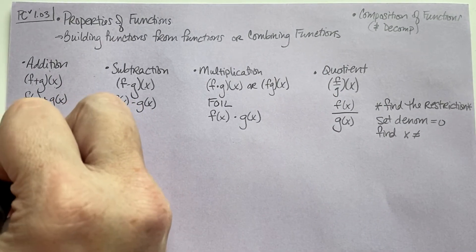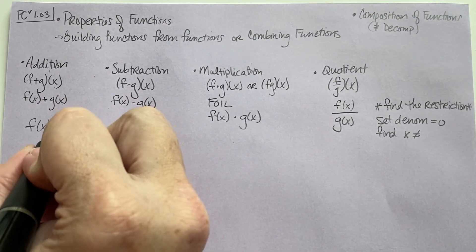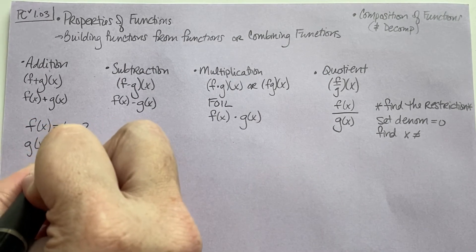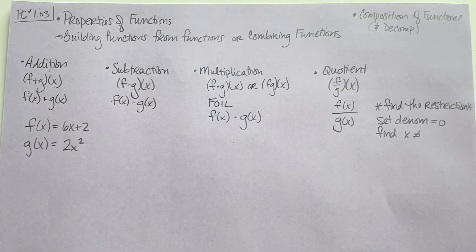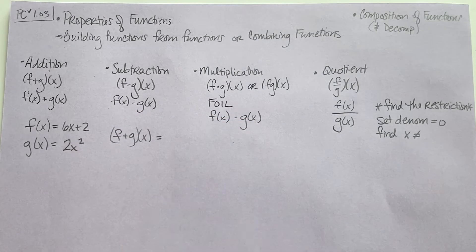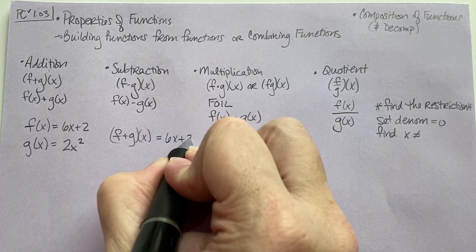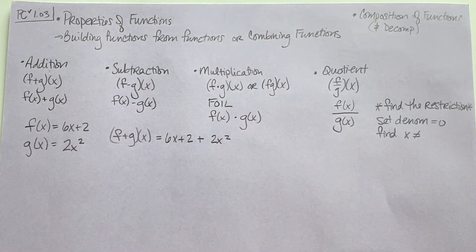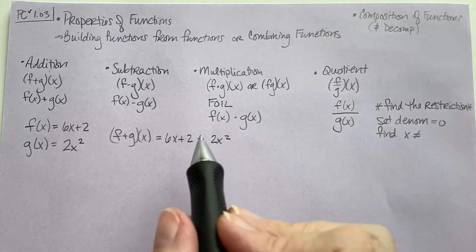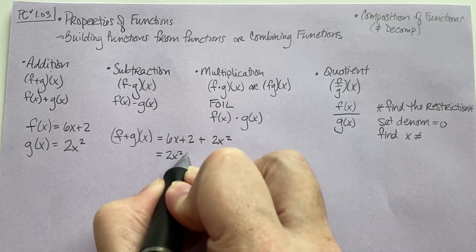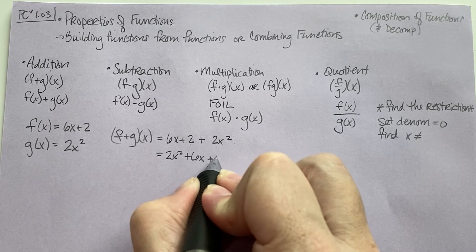Let's say our f function is 6x plus 2 and our g function is 2x squared. First, let's do f plus g of x. That's just going to be 6x plus 2 plus 2x squared. Now we combine like terms. There's no other x squared, so 2x squared; no other x, so plus 6x; and no other constant, so just plus 2.